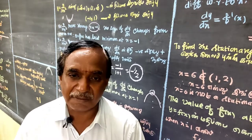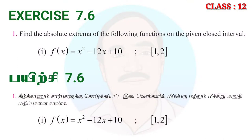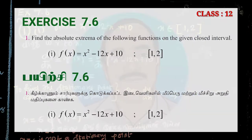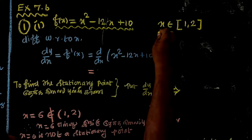Welcome to XE 7.6. We are going to discuss the first problem: find the absolute extrema — that is, the absolute maximum and absolute minimum — of the following function on the given closed interval. f of x is equal to x squared minus 12x plus 10, and the closed interval is [1, 2].